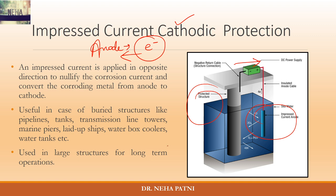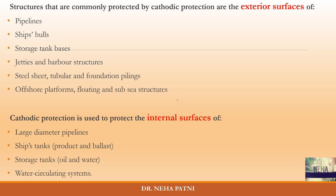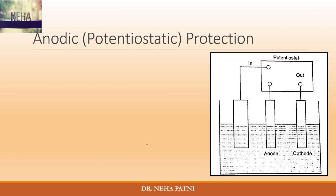Impressed current cathodic protection is very useful for buried structures, pipelines, tanks, towers, and coolers. It is used in large structures and large operations. It is helpful for safety of exterior surfaces of pipelines, ship hulls, jetties, and tank bases. It also protects internal surfaces of tanks, especially storage tanks and water circulating systems.